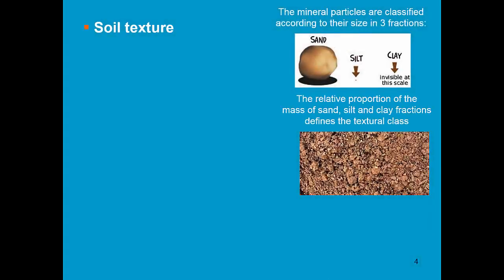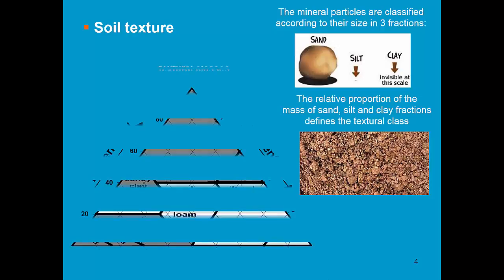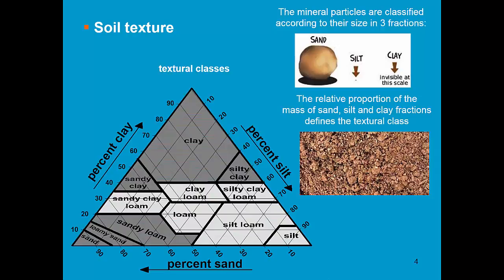The relative proportion of the mass of sand, silt, and clay defines the textural class. Therefore, we use the textural triangle in which twelve textural classes are defined. Let's assume that the relative proportion of the mass of sand is 35% and the relative proportion of the mass of clay is 22%. Then we get a loam soil.